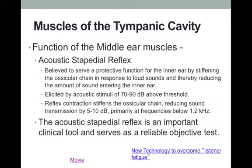The acoustic stapedius reflex is automatic, and in audiology it is used as an objective tool to assess one's hearing. It is an important test within the middle ear assessment — something we will discuss in the next lecture — because it is reliable and objective, meaning it does not require participation of the patient. It is often used to indirectly assess hearing levels, which is very worthwhile for difficult-to-test populations like children, where an objective means of assessing hearing is needed.